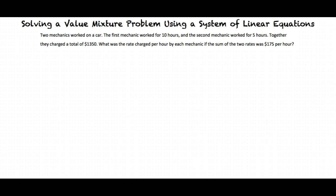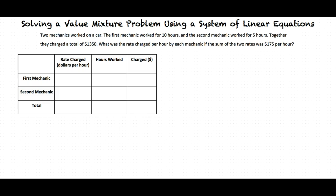What kind of information are we given? Well, it tells us the sum of the two rates, the hours each mechanic worked, and the total amount charged. Correct. Now we determined earlier that we want to find the rate charged per hour by each mechanic, so we will assign these variables.